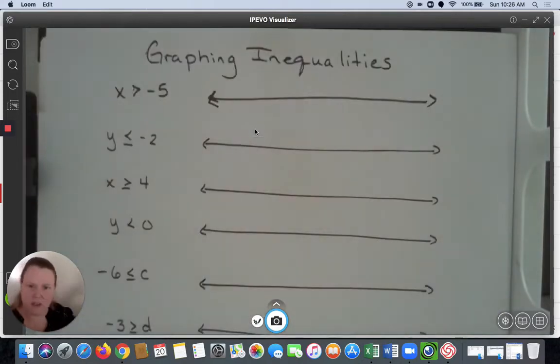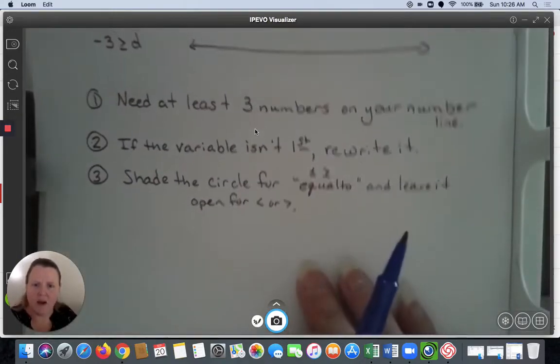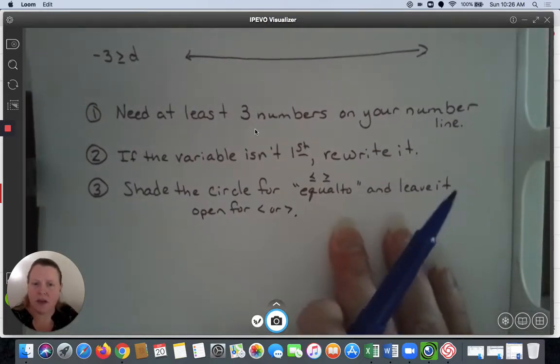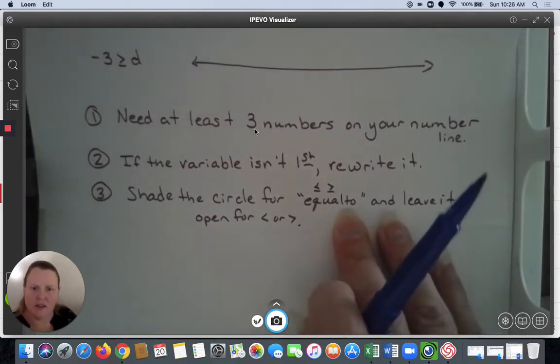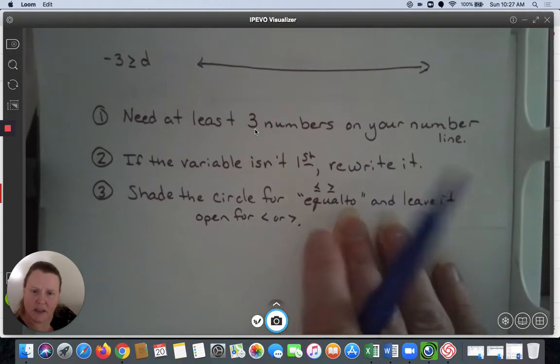We aren't going to practice those today; we'll just look at your inequalities. I have a couple of notes. When graphing inequalities, I expect at least three numbers on the number line to prove you understand how it works. Many students struggle on the negative side, so if you put three numbers, I'll know we're graphing it the same way.